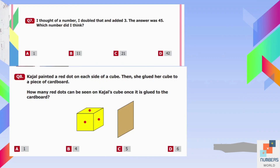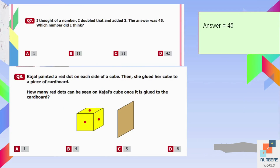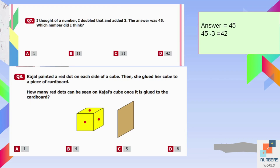Question number seven: I thought of a number, doubled it, and added three. The answer was 45. Which number did I think of? We take the inverse of the operations. First, subtract 3 from 45 to get 42. Then take half of 42, which is 21. C is our answer.